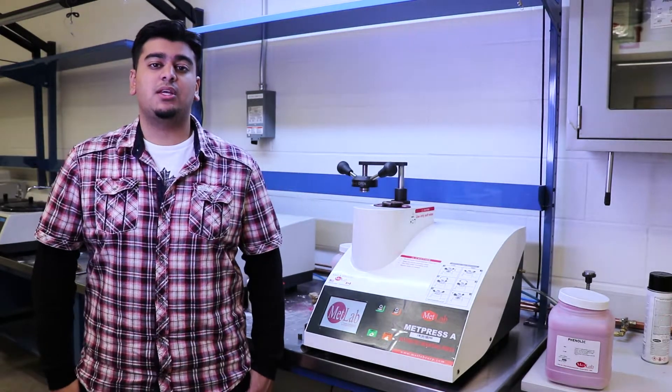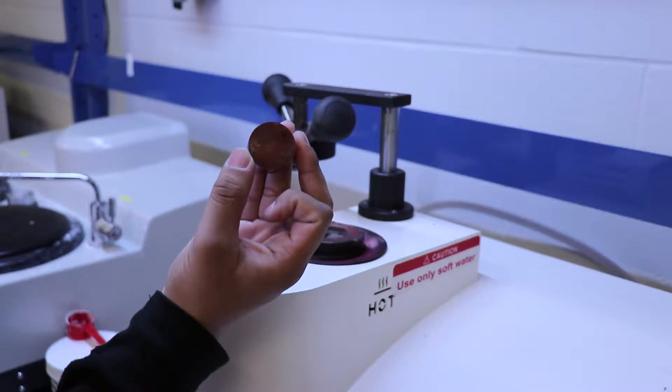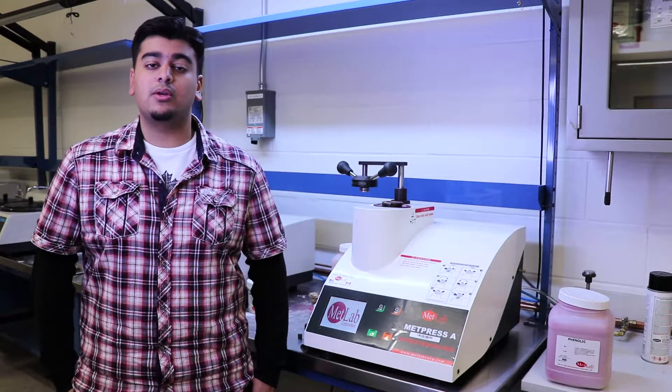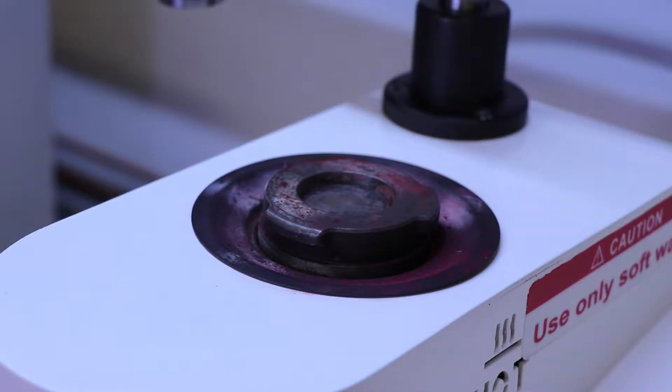So the purpose of this hot press machine is to create a puck-like block that's going to hold your sample so that you can do hardness tests or view it under a microscope. So the first step is placing your sample onto the plate of the hot press machine.